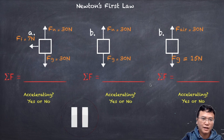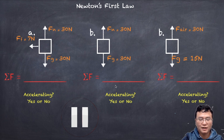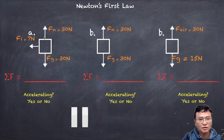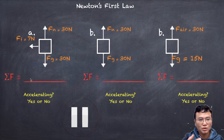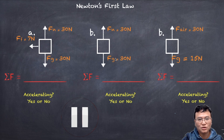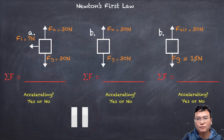For this problem, you need to find the net force for each of three situations and determine whether the object is accelerating. For the first case, the vertical components cancel out: 30 N up and 30 N down cancel, and what remains is a net force of 7 N to the left. For the second case, 30 N up and 30 N down cancel, giving 0 N net force. For the third case, 30 N up and 15 N down gives a net force of 15 N upward.